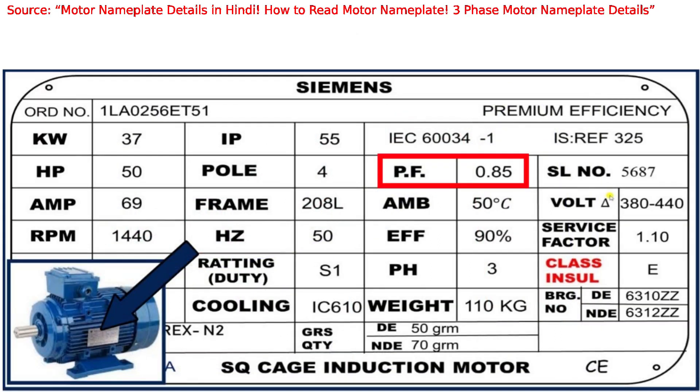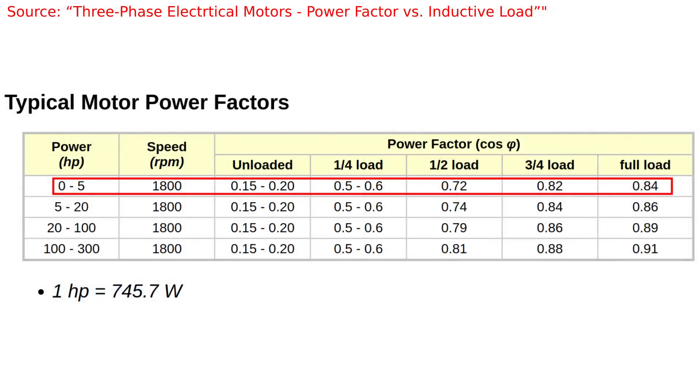Earlier, I said that the typical power factor of a motor this size is around 0.8. This parameter is written on the nameplate of induction motors, and the value written is the power factor when the motor is at full load. However, the power factor isn't a constant parameter. It changes with the load. So, if I'm loading my motor with half its full load, its power factor will decrease.